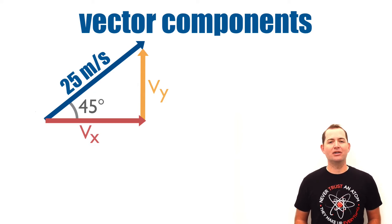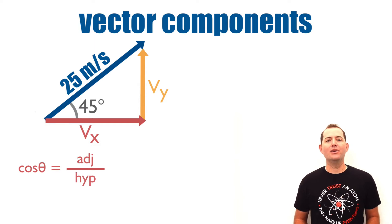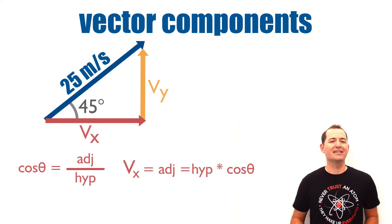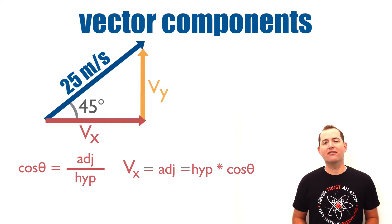To find the x component, we know that the cosine of theta is equal to the adjacent side divided by the hypotenuse. We can rearrange this equation so that the component of the velocity in the x direction, or the adjacent side of the triangle, is equal to the length of the hypotenuse times the cosine of theta, or our angle.